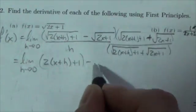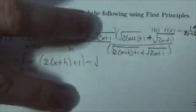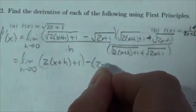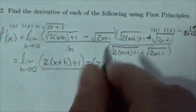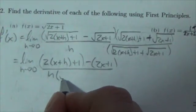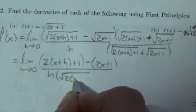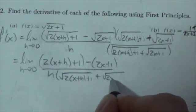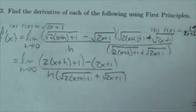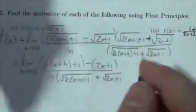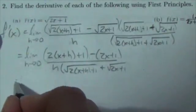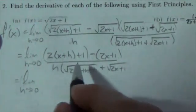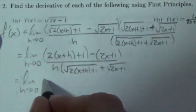This will be 2 times x plus h plus 1 minus 2x plus 1 all over h times the square root of 2x plus h plus 1 plus the square root of 2x plus 1. In the numerator, this is still the limit as h approaches zero.